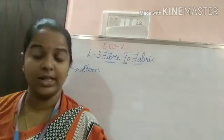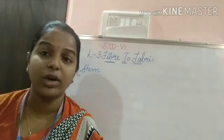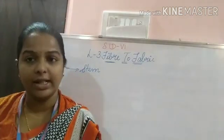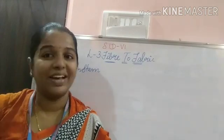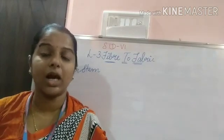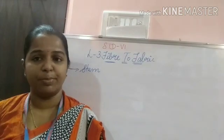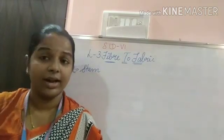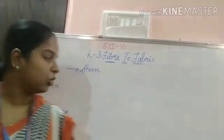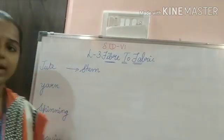Jute grows in the rainy season, and it is grown in places like Bihar and West Bengal. Now let's move on to the topic of yarn.